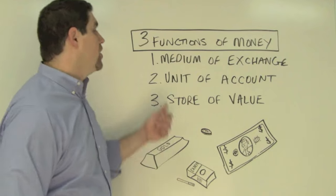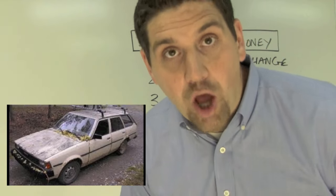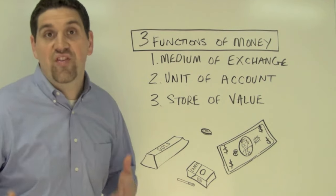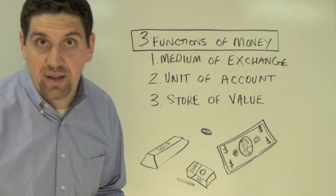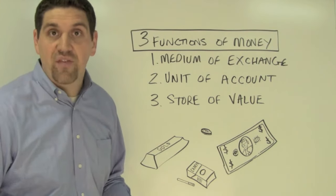The second function of money is the idea of a unit of account. So if I told you that car is worth $500, that gives you information. A car that's worth $50,000 is obviously going to be different. So money helps measure the relative value of different goods and different services.